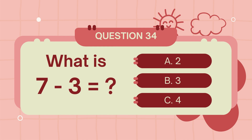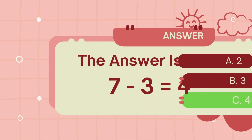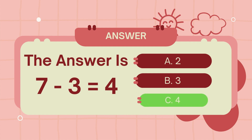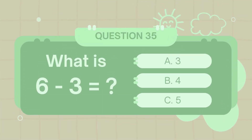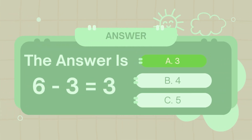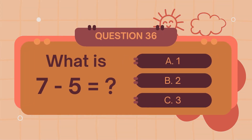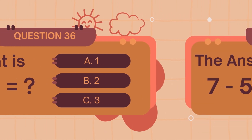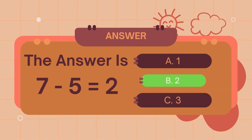What is 7 minus 3? The answer is 4. What is 6 minus 3? The answer is 3. What is 7 minus 5? The answer is 5.